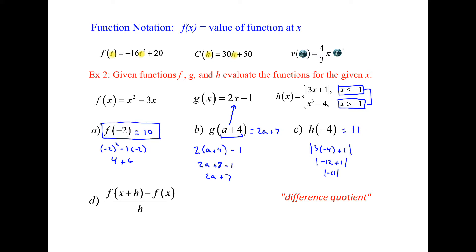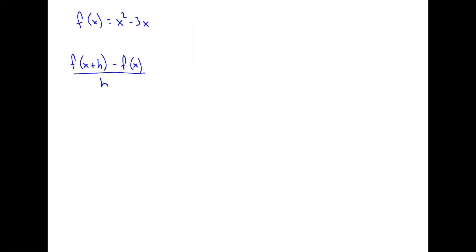That's how you evaluate different functions given different information. Now the last part is called the difference quotient: you take f of x plus h minus f of x, divided by h. This is something we'll use later in the course when we get into calculus. I'm going to move to the next page and evaluate this for function f of x.